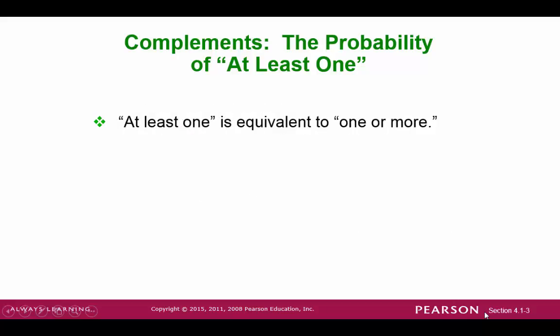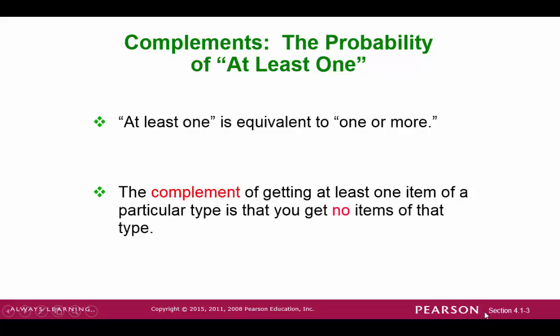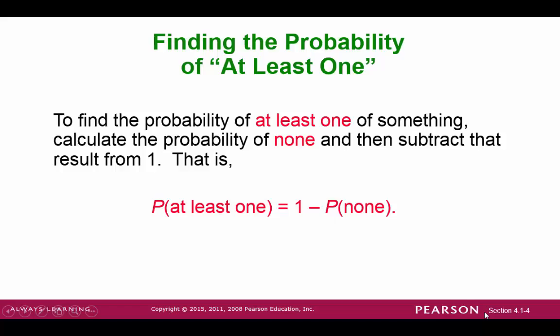Let's take a look at the phrase at least one. This means one or more. Think about the opposite of one or more, that's none. So the complement of at least one is getting none. So it follows from the probability of getting at least one is 100% minus the probability of its complement, which is getting none. This comes from our complementary rule.